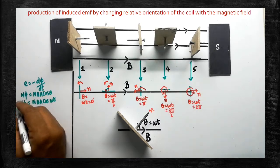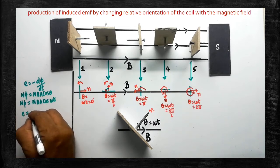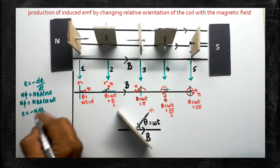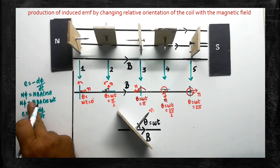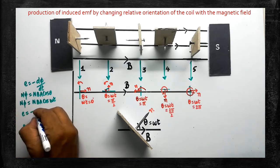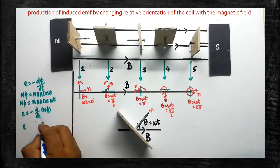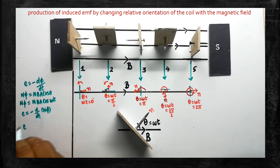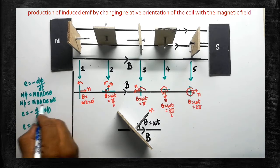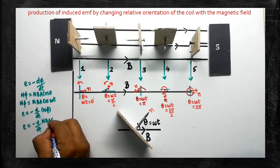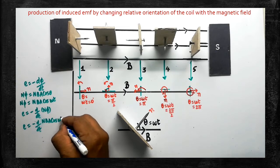Therefore, we differentiate only the cos(ωt) term. E equals minus N·B·A times d/dt of cos(ωt). Writing constant factors outside: E = −N·B·A · d/dt[cos(ωt)]. Differentiating cos(ωt) gives minus sin(ωt), and differentiating ωt gives omega. So we have E = −N·B·A · (−sin(ωt)) · ω.